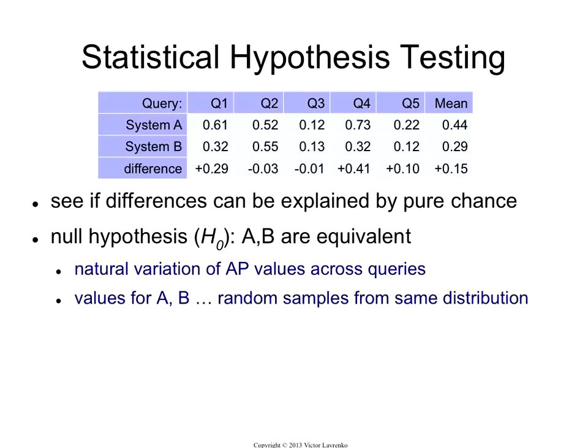So they really are the same system, and you're just randomly pulling out numbers out of the hat. And you happened to pull out these numbers when you were measuring system A, and those numbers when you were measuring system B.